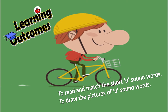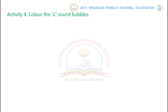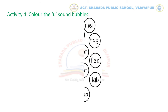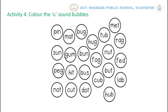Let us see today's first activity: colour the U sound bubbles. Kids, in this activity you have to read and colour the U sound words. For example, let us read a few words.